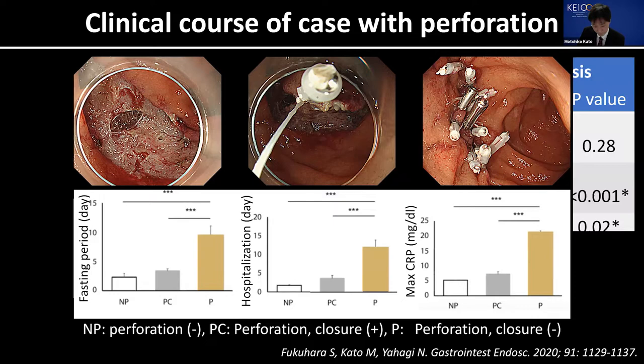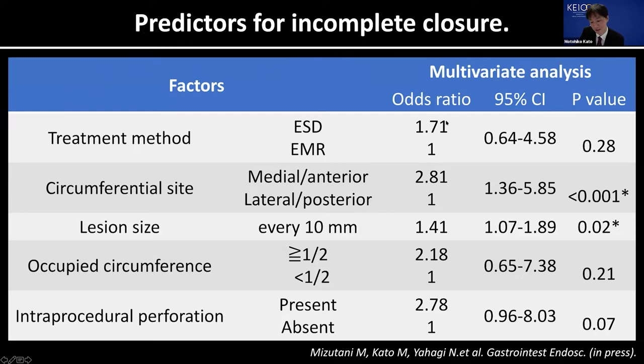On the other hand, sometimes complete closure is difficult or even impossible, so it is important to prepare for this. In multivariate analysis, we found that medial and anterior wall location and larger lesion size are associated with incomplete closure after duodenal ESD. We should prepare for such lesions before the procedure.